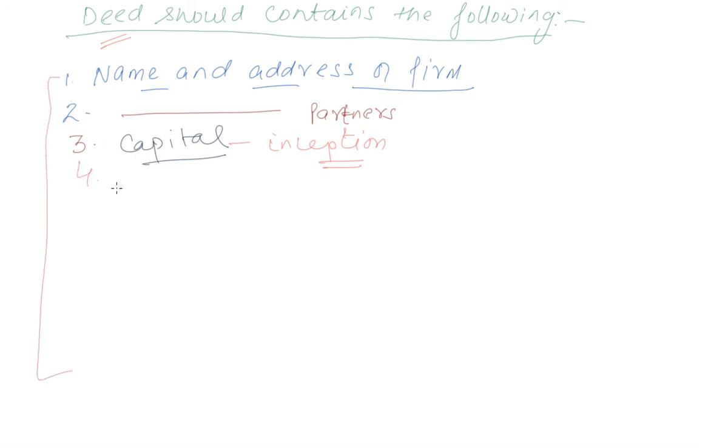Fourth point is, how much interest on capital firm is going to provide? Because, if no information on this amount is provided in the deed, then what is the benefit of this deed? It will go waste and there is no any understanding between the partners about interest on capital. On the last day of the year, they will fight each other and whoever invest more will ask more interest and whoever invest less will ask interest less on that. So, there will be a fight. So, to avoid those old misunderstanding, deed should contain all these things.